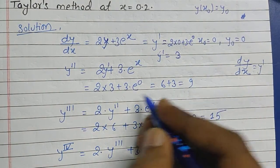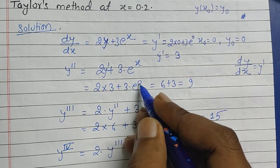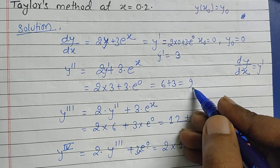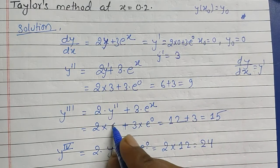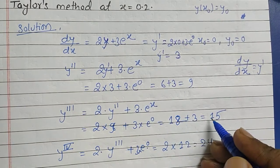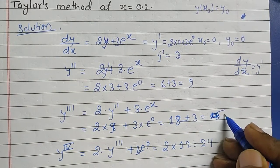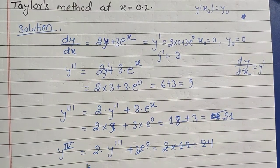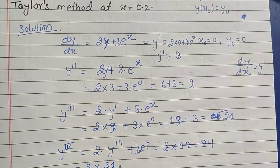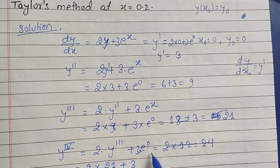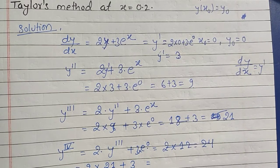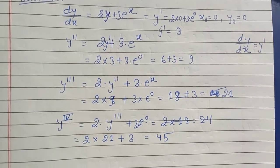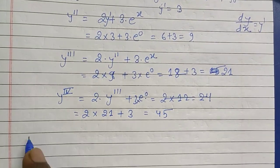I had made a mistake — I did not include 3e^0 = 3 properly. Correcting this: y'' = 2(3) + 3(1) = 6 + 3 = 9. Then y''' = 2(9) + 3e^0 = 18 + 3 = 21. Then the fourth derivative y'''' = 2(21) + 3e^0 = 42 + 3 = 45.